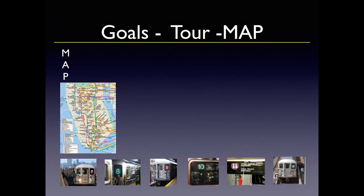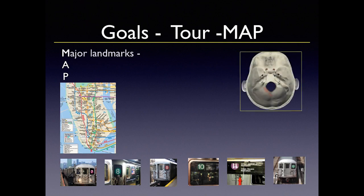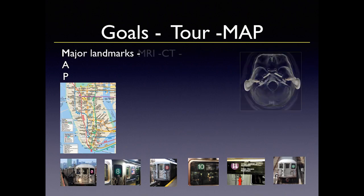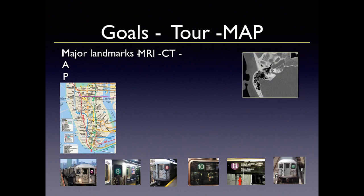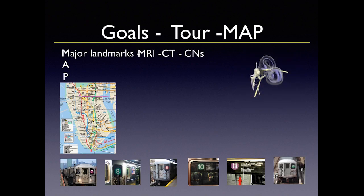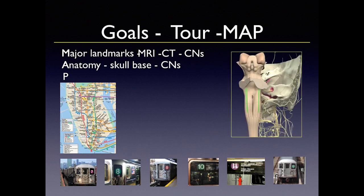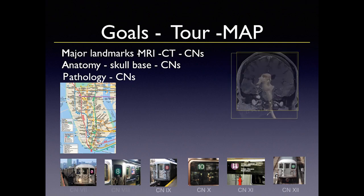My goal in this lecture is to give you a map, similar to a map of New York City, where you can see all these lines. My goal is that you can master those major landmarks and we're going to look at them on both MRI and CT. We'll follow the cranial nerves through those landmarks, focusing on key anatomy of the skull base, those cranial nerves, and the pathology that can affect them.